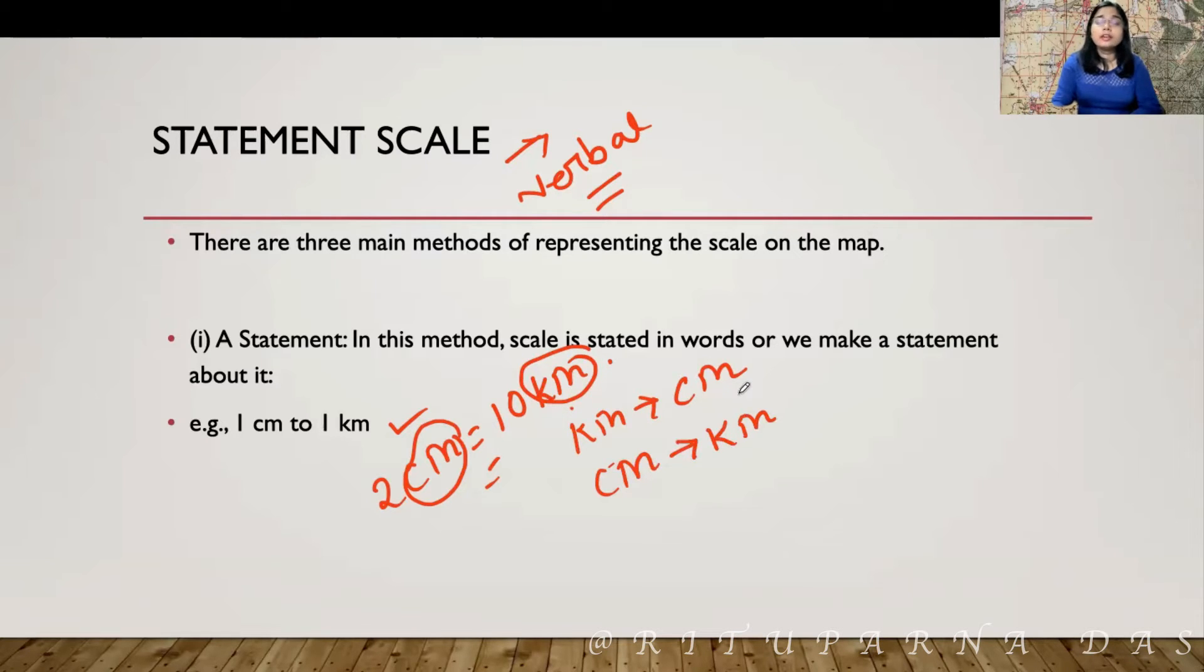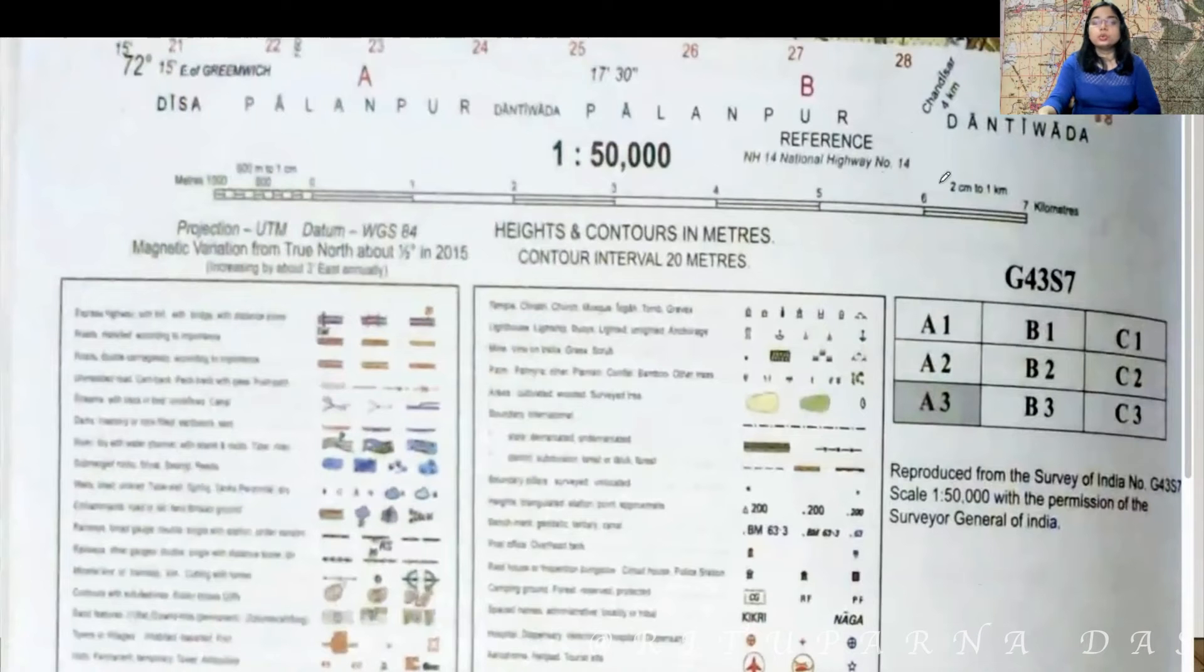Now, you also have to find out what is the statement scale or the verbal scale in the ICSD topographical map. Here you can see it is written. That is 2 cm is equal to 1 km.